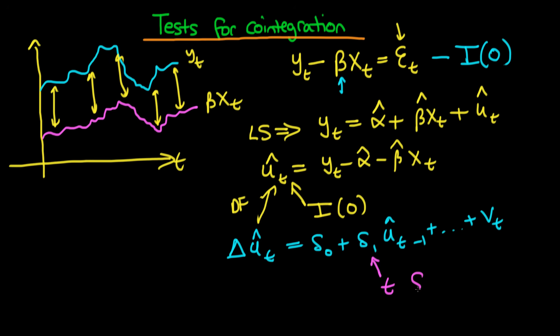And the idea here is then we would calculate a t statistic for this delta 1 or delta 1 hat technically. And we would compare that with a standard Dickey-Fuller distribution. And if the t stat was less than a particular critical value for that Dickey-Fuller distribution then we would reject the null and conclude that our error is I0. In other words, Yt and Xt are cointegrated.